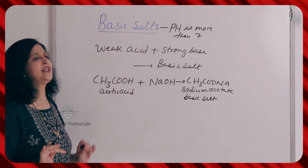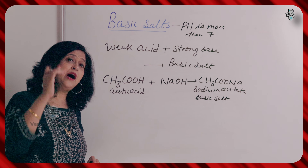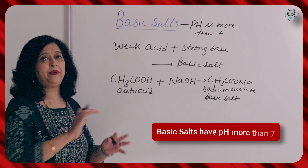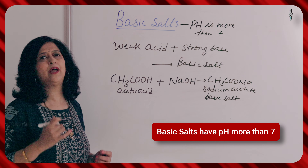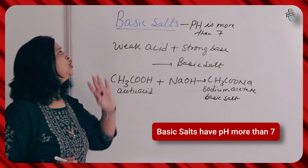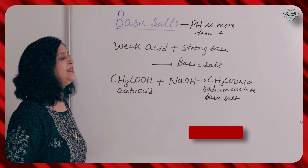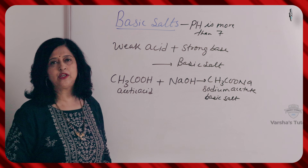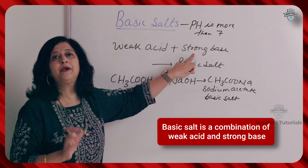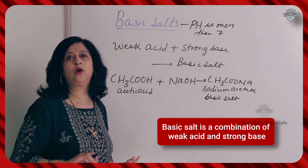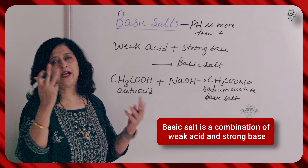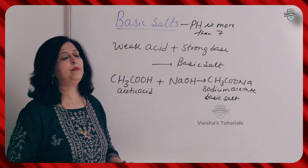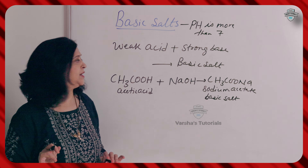Now let's look at basic salt. In basic salt, the base part is strong. The pH will be between 7 and 9 — more than 7. So this will be our basic salt. As I told you for acid salt — strong acid and weak base — for basic salt it is the opposite: strong base and weak acid. The weak acid is suppressed, the base is dominant, so weak acid and strong base gives our basic salt.